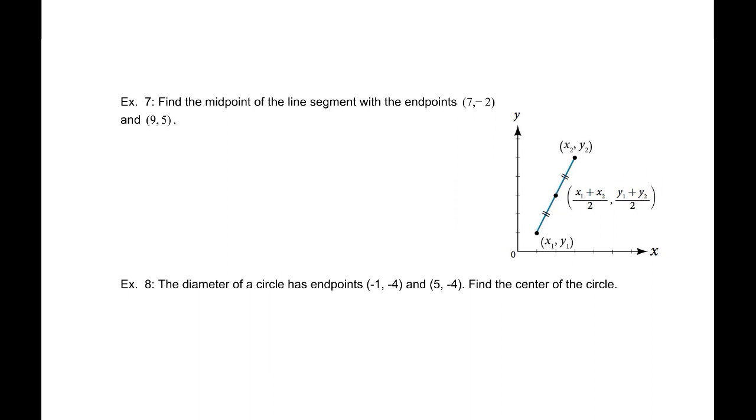So, the way we are going to find this is our midpoint is the point (7 + 9)/2 comma (-2 + 5)/2. We'll average the x values, average the y values. And we'll go ahead and say that's equal to, this will be 8 and that is 3/2. 3/2 so there is our midpoint of that line segment without drawing it.